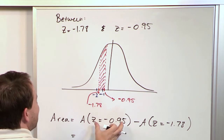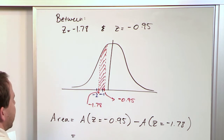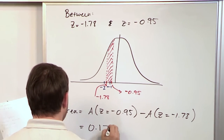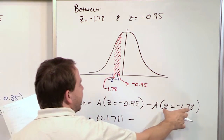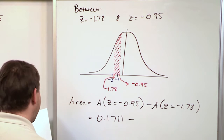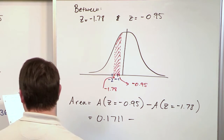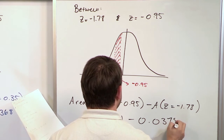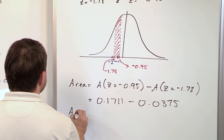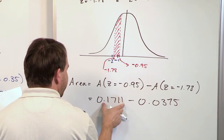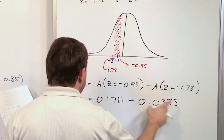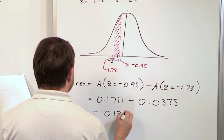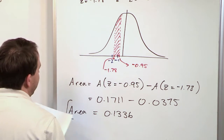If you look up negative 0.95 in the chart, the answer you get is 0.1711. And if you look up z = -1.78 in the chart, you get 0.0375. So the area, when you subtract those — 0.1711 minus 0.0375 — is 0.1336. That is the area between those two z values.